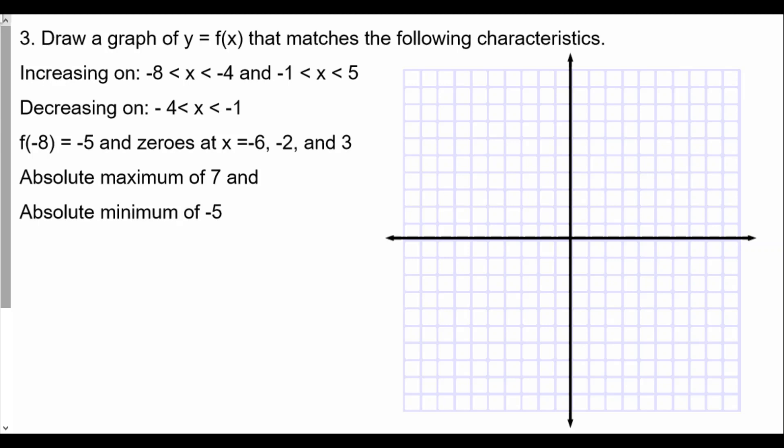Here we're on question number 3. Draw a graph of y equals f of x that matches the following characteristics. The graph should be increasing from negative 8, where negative 8 is less than x is less than negative 4, and from negative 1 to positive 5 it should be increasing, but then decreasing from negative 4 to negative 1. We also have f of negative 8 is equal to negative 5, and that's one of the first points we're going to cover.